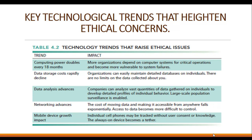The first trend is that computing power is doubling every 18 months. The power of computing is increasing at a very fast pace, and this trend has made it possible for most organizations to use information systems for their core production processes. More and more businesses are now relying on information systems. As a result, our dependence on systems and our vulnerability to system errors and poor data quality have increased.